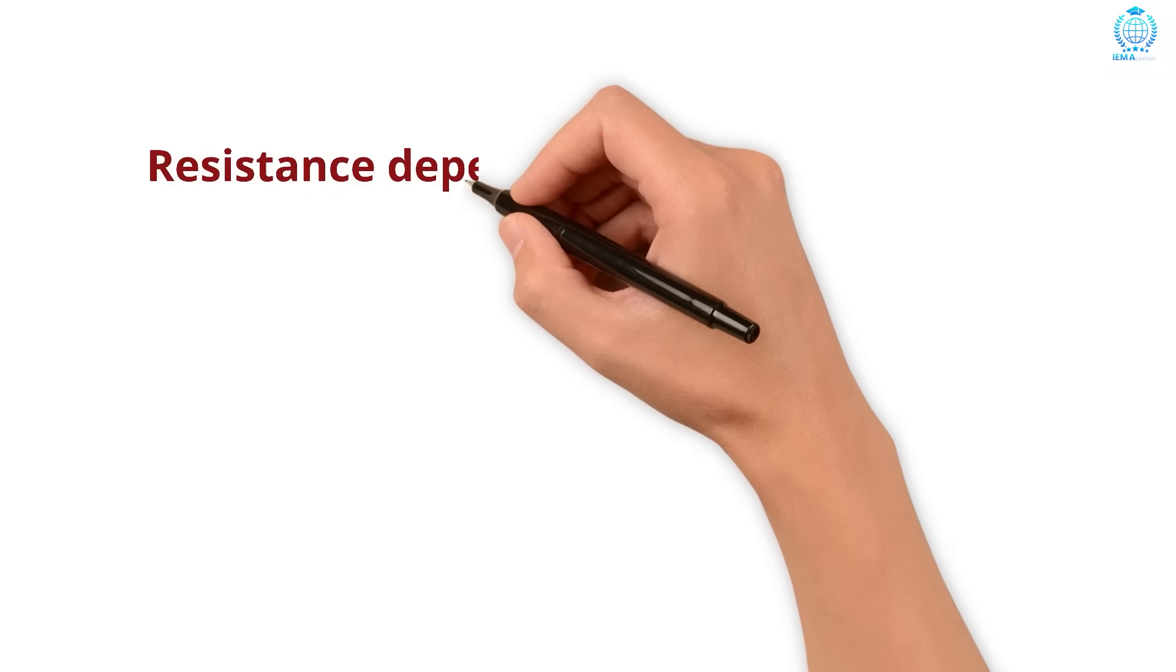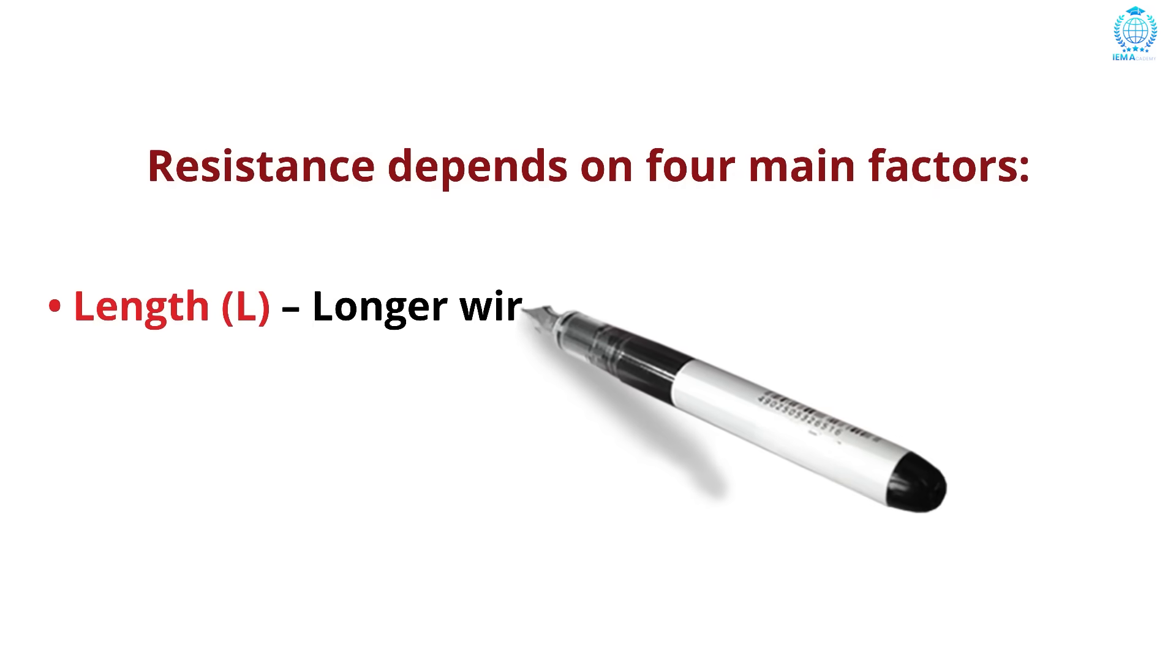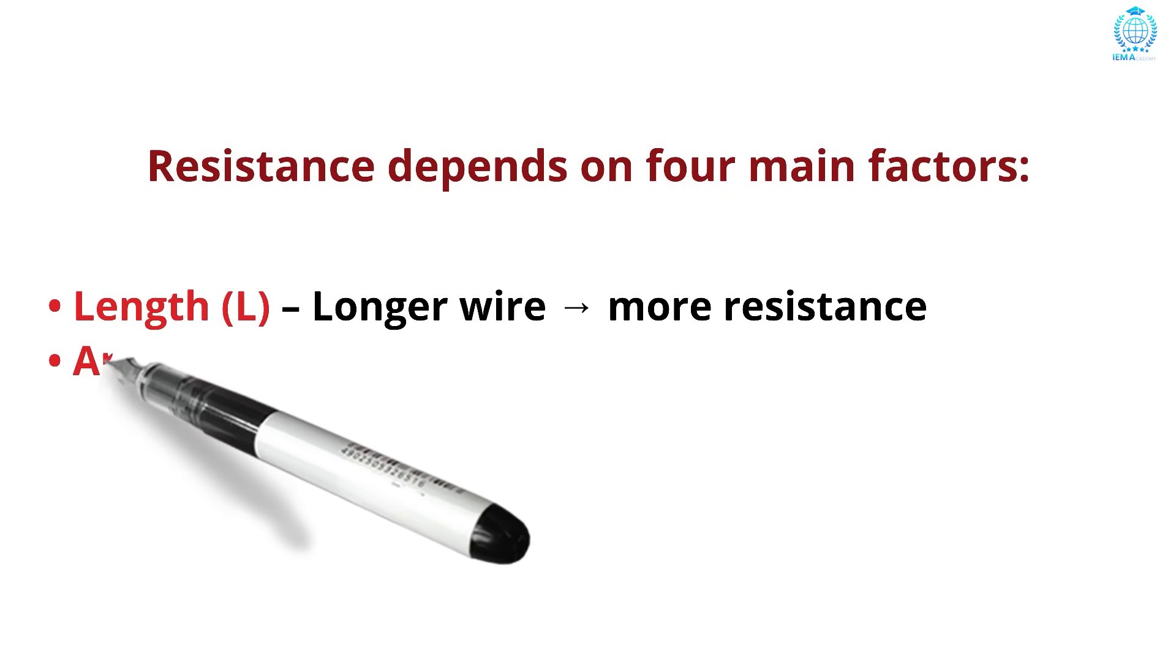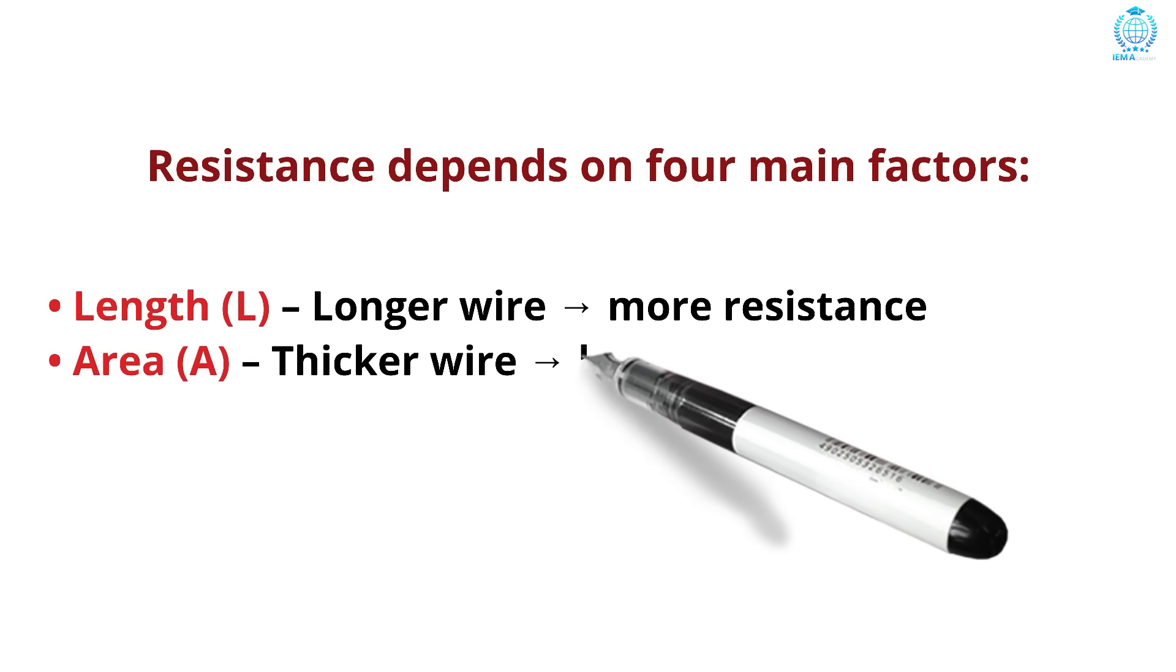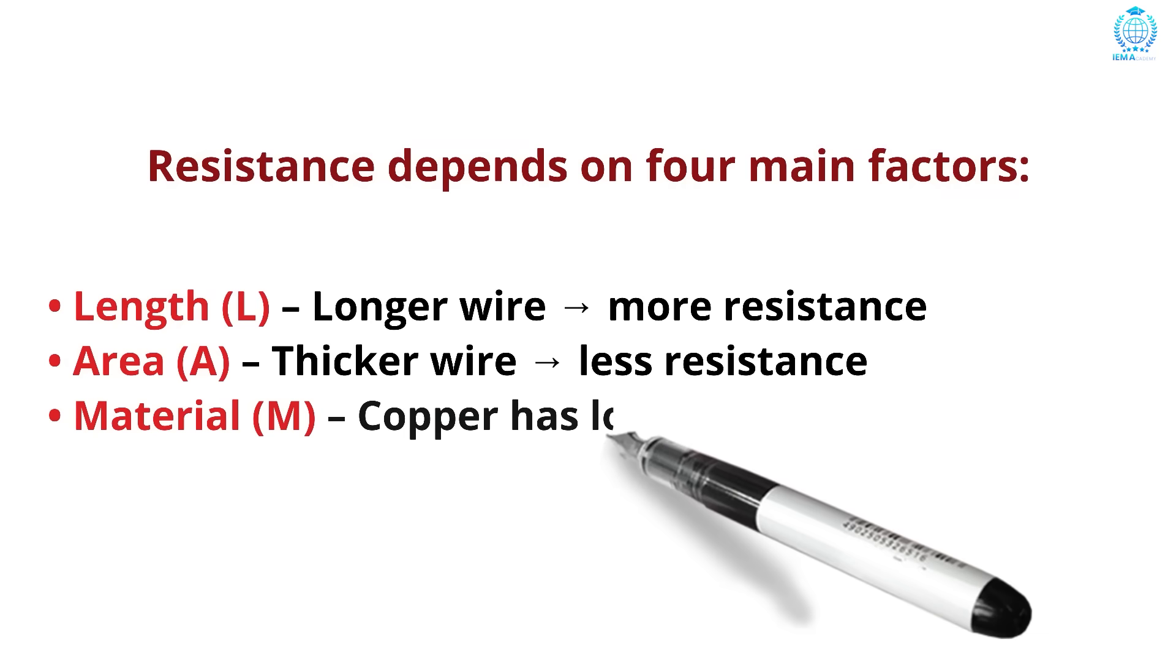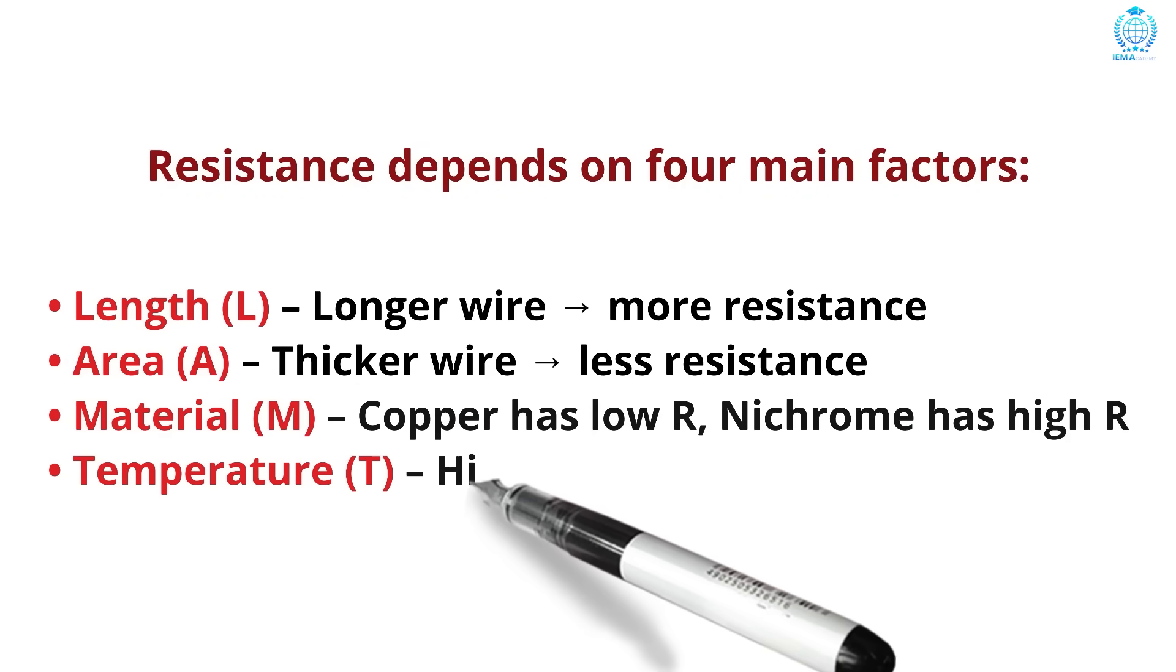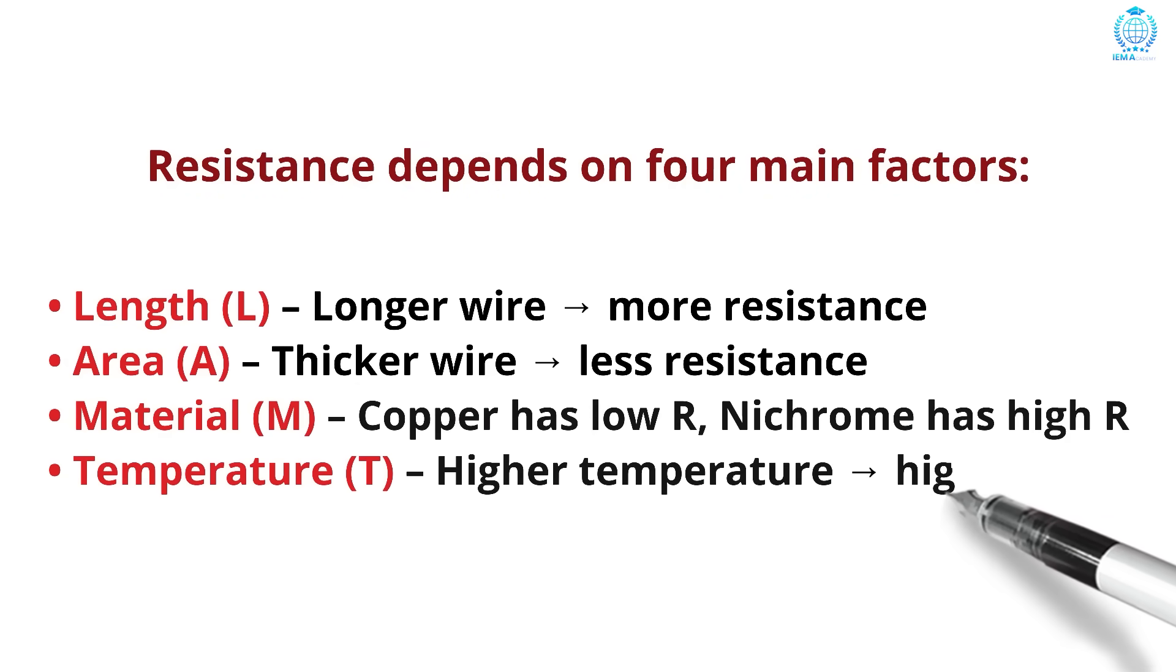Point number four, what affects resistance? Resistance depends on four main factors. Length, longer the wire, more the resistance. Area, the thicker wire, the less resistance. Number three, material. Copper has low resistance, nichrome has high resistance. And number four, temperature. Higher the temperature results in higher resistance.